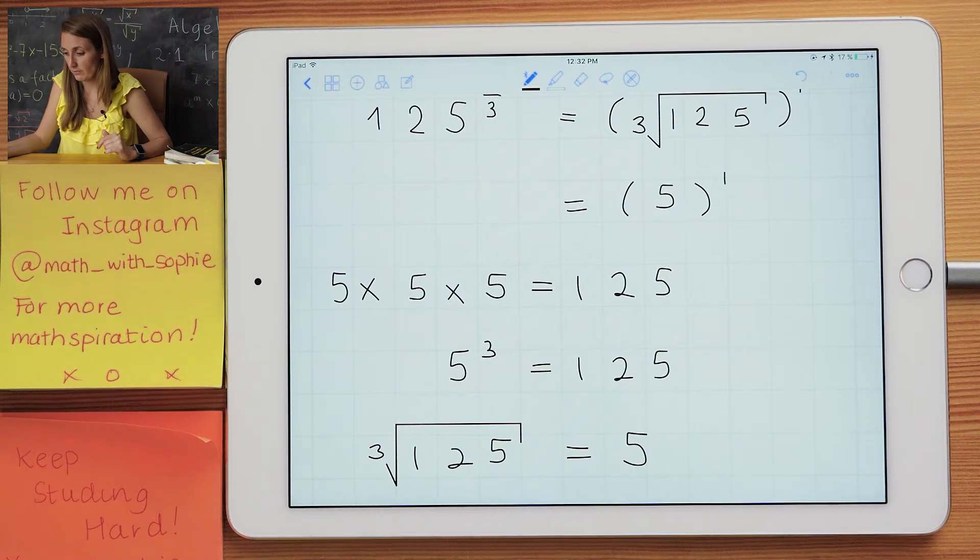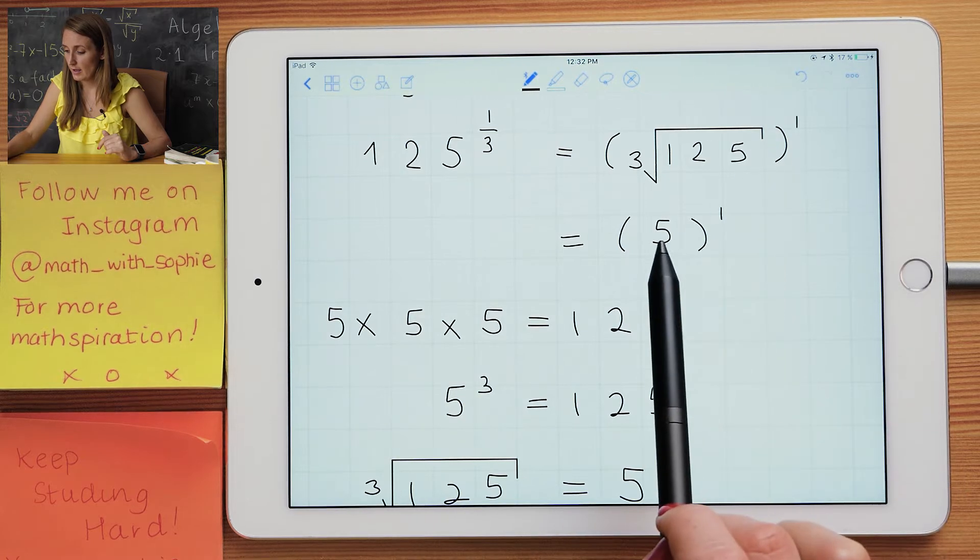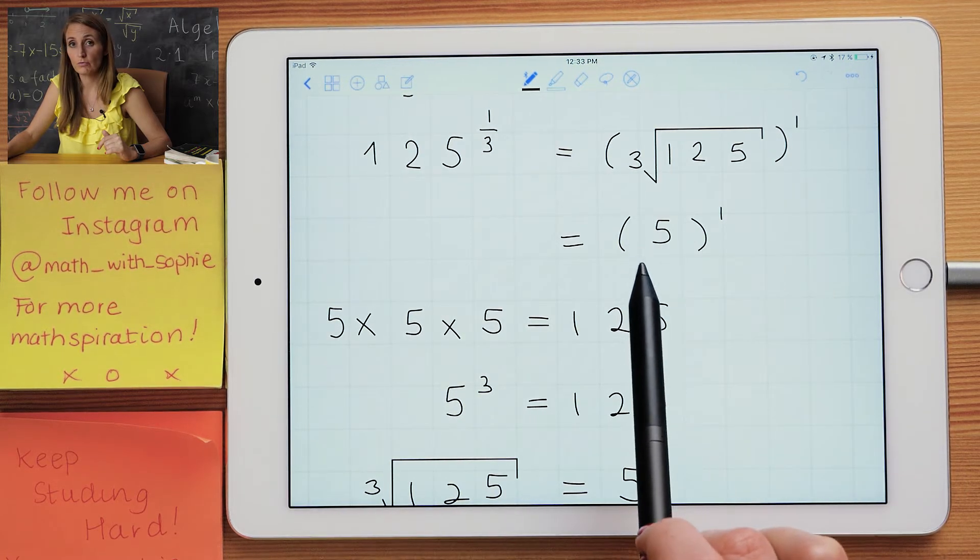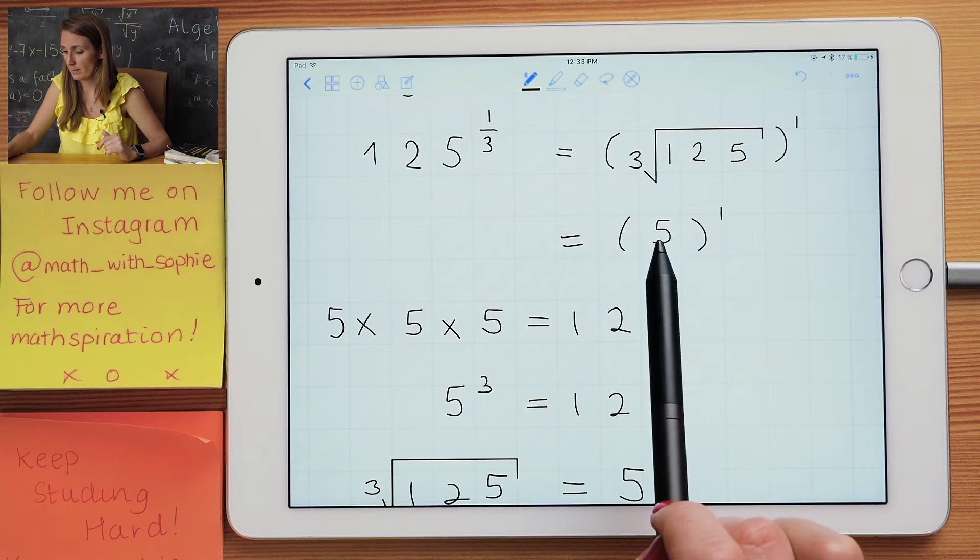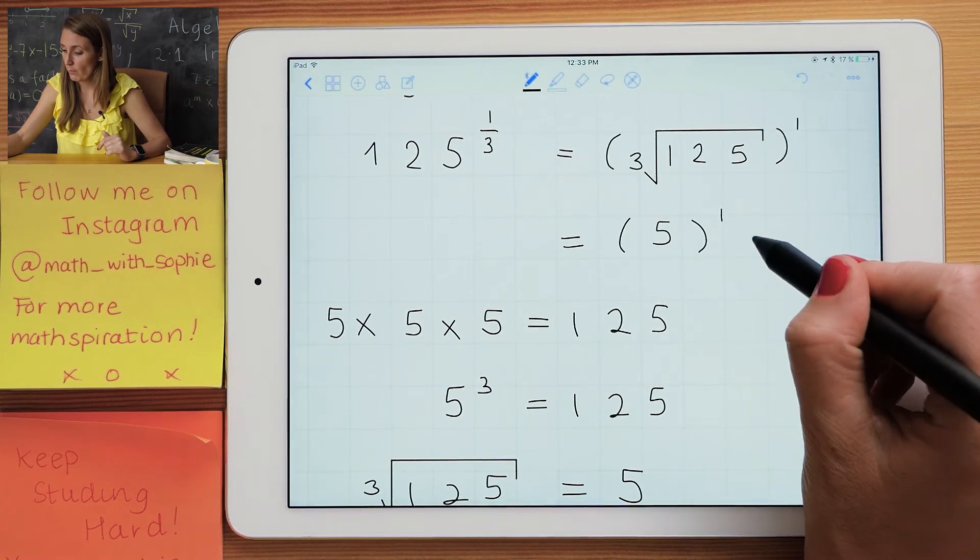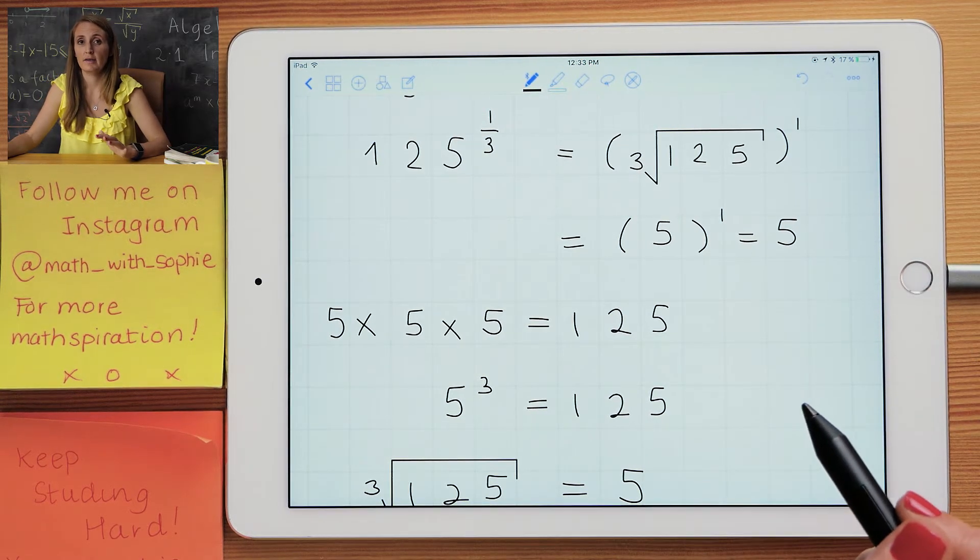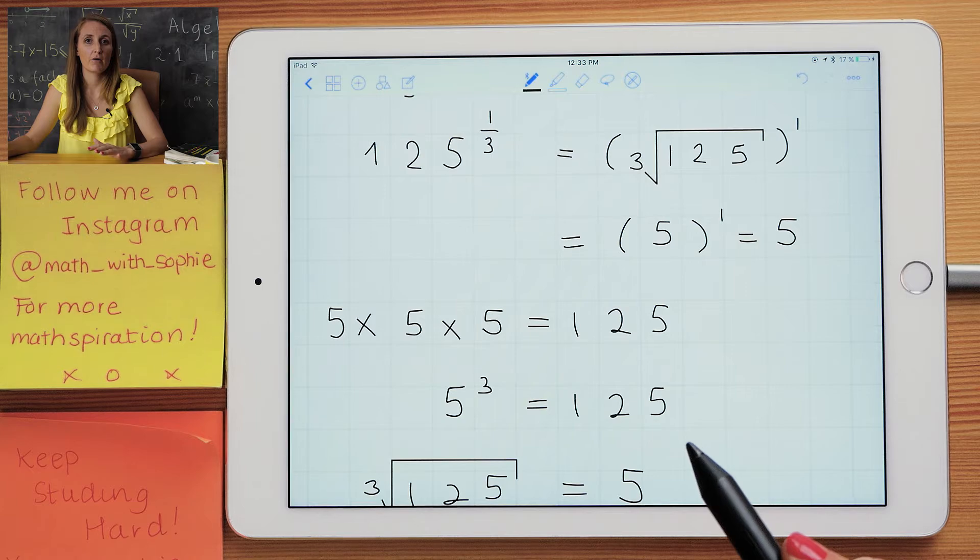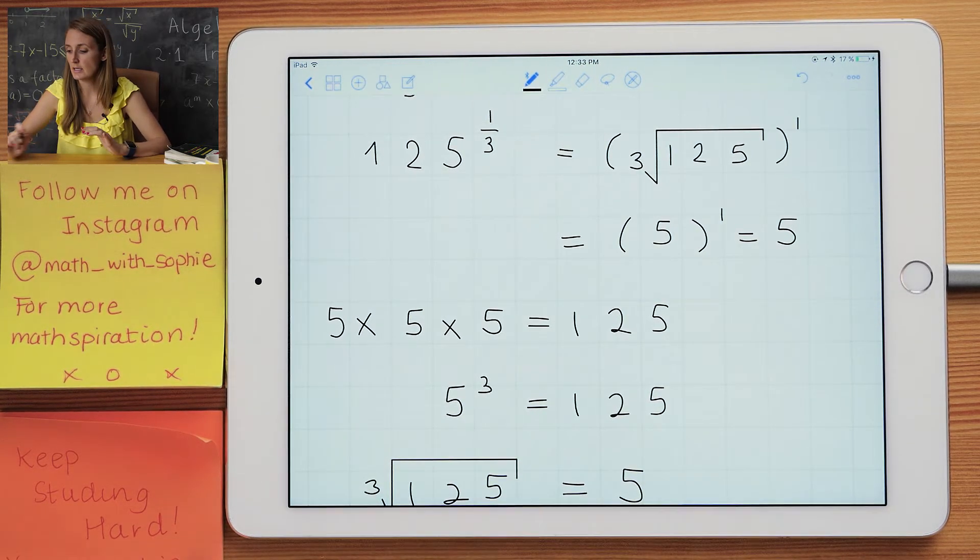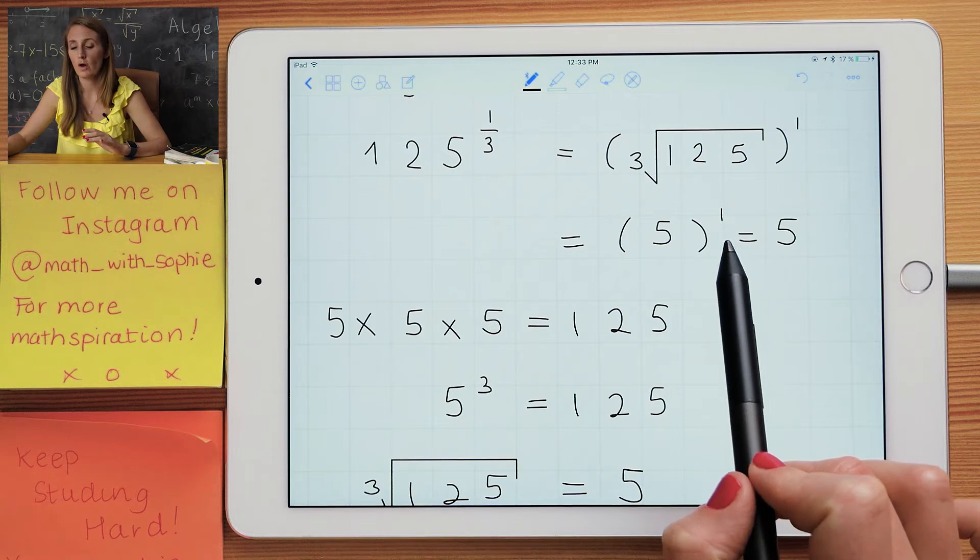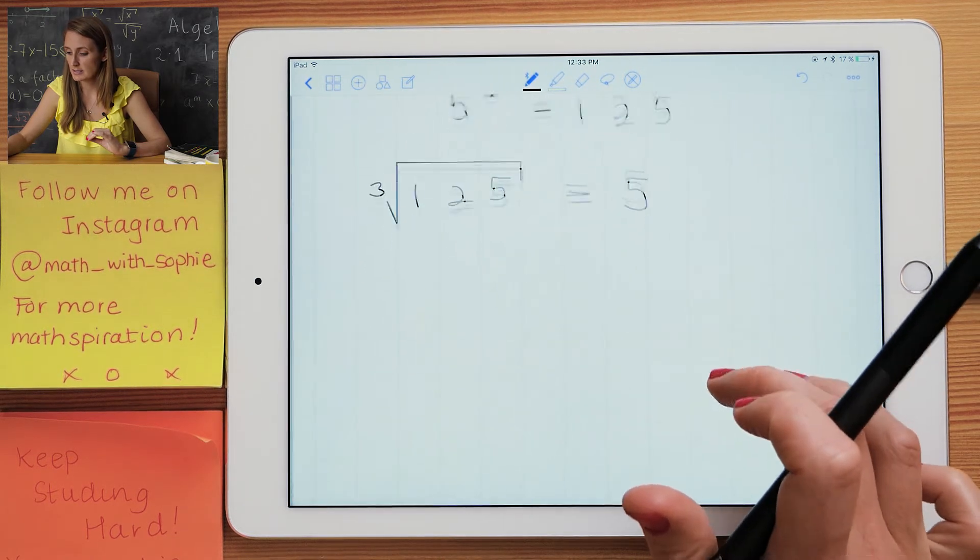So that's how you do inside the bracket. Now you take your answer from the root or the cube root and you raise it to the power. So 5 power 1 is just 5, because any number power 1 is just itself. 7 power 1 is 7, 120 power 1 is 120. So anything power 1 is itself. Let's do a second example of that.